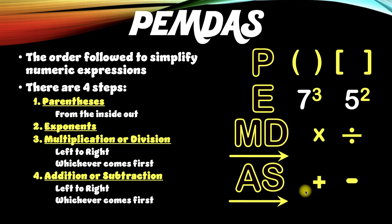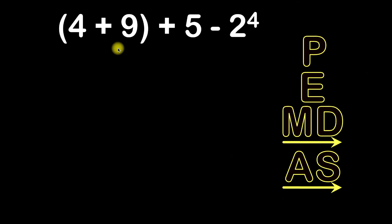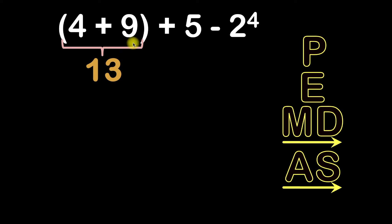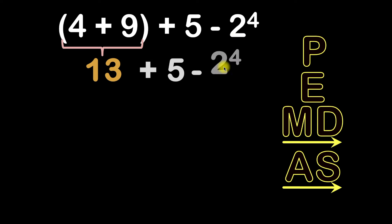Now let's get to our first example. We have the expression: four plus nine, plus five, minus two to the fourth. Let's start from step one — the letter P, which stands for parentheses. Do you see any parentheses here? Yes. Inside the parentheses we have four plus nine, which equals 13. I'll write that right under here. Are there any other parentheses? Nope, so I'll bring down everything else: the plus sign, the five, the minus sign, and the two to the fourth.